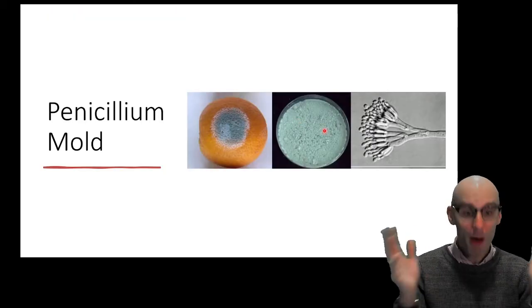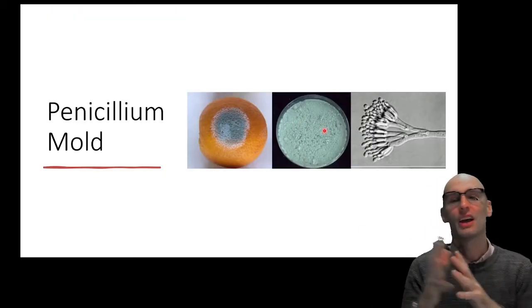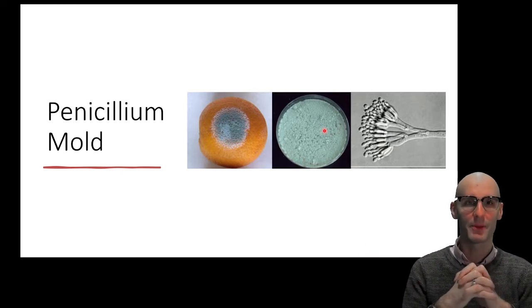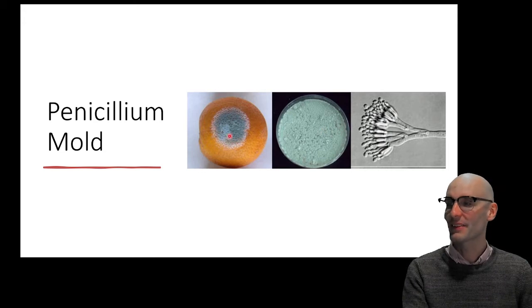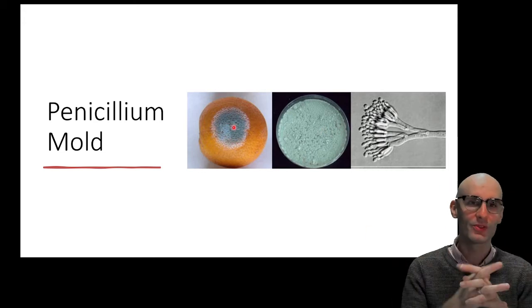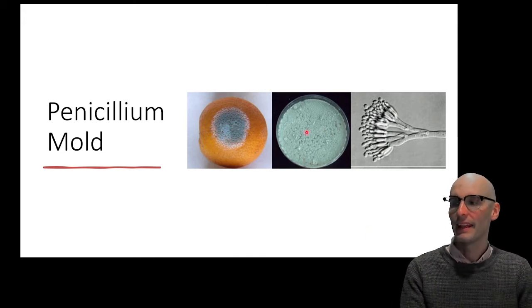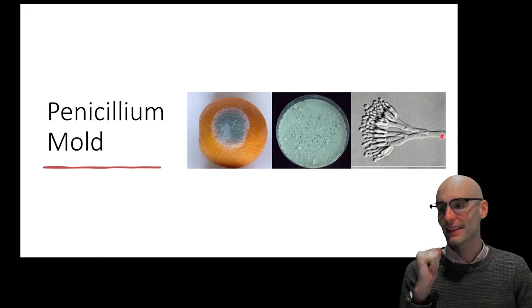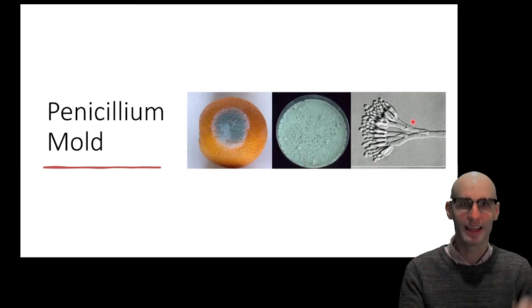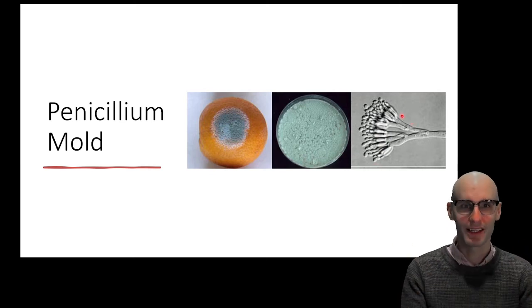Now, molds are also fungus. So penicillium mold, made very famous by the production of penicillin, Alexander Fleming's experiment. They look like this. They're very common, typical green molds growing on things. And this is what they look in a petri dish, and this is what they look under a microscope. And we see that they've got these hyphae. So these are multicellular fungus.